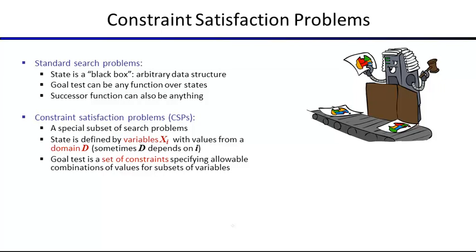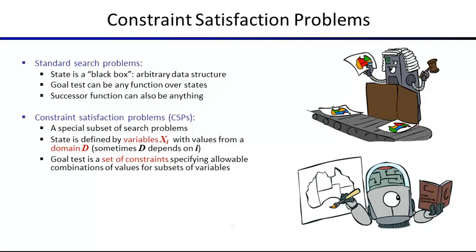As you take actions you're assigning values to variables, and at some point you have a fully colored map. If that colored map satisfies the goal condition — every neighboring territory has a different color — you're happy. The goal test in a CSP is not just one big test but a set of constraints. In map coloring, there's a constraint for every neighboring pair of territories that they can't have the same color.